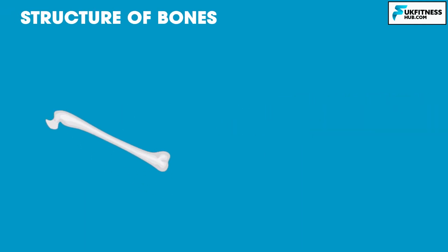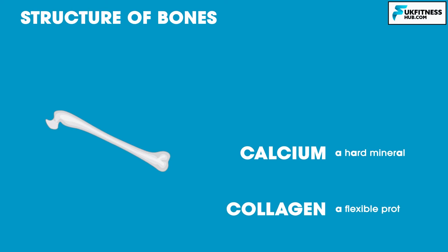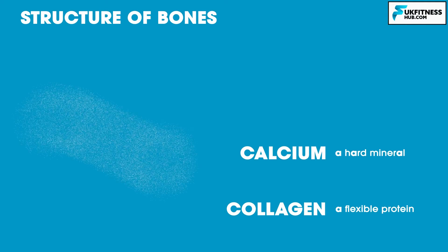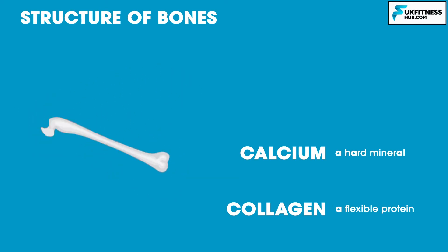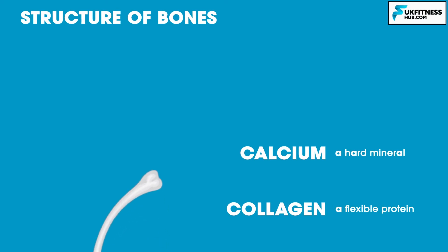Bones are hollow structures made up of composite material and contain both calcium, which is a hard mineral, and collagen, which is a flexible protein. If bones were just made of calcium, they would shatter, and if bones were just made of collagen, they would be too elastic and would bend like rubber.